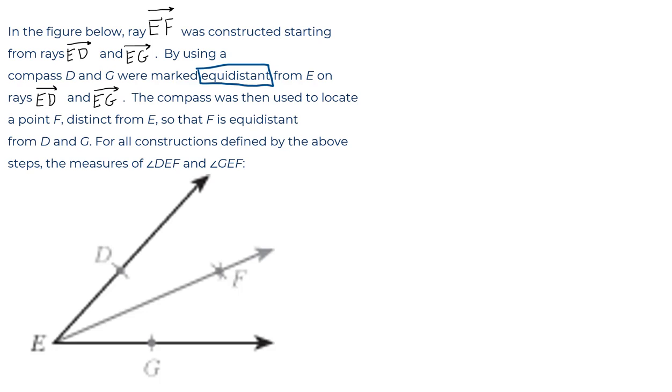So in the figure below, ray EF. What's that? I'll mark that in black. It's an arrow that would go on into infinity, but here's point F marked on that line.